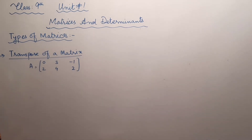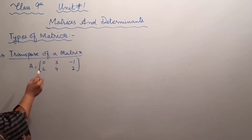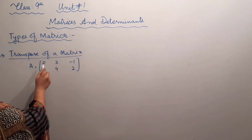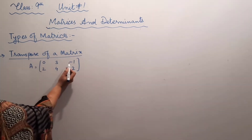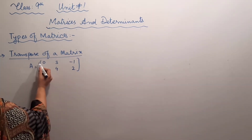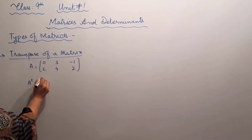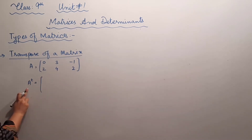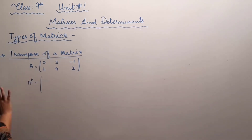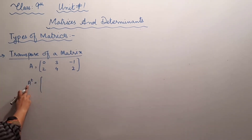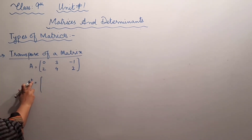Transpose of a matrix means changing rows into columns or columns into rows. Here A is having 0, 3, minus 1 in the first row. If we are going to take the transpose of matrix A, it is represented by A and small t.